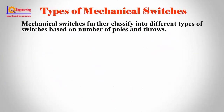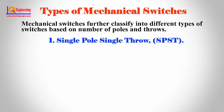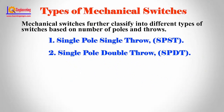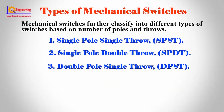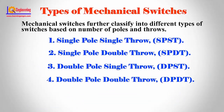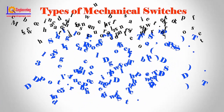Mechanical switches further classify into different types based on number of poles and throws. There are five types: 1. Single pole single throw. 2. Single pole double throw. 3. Double pole single throw. 4. Double pole double throw. 5. Intermediate switch.